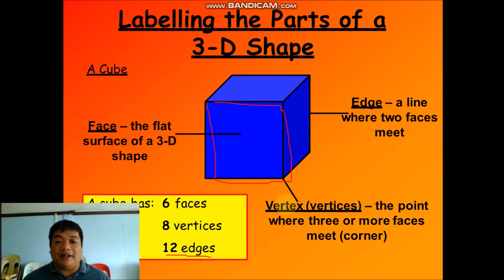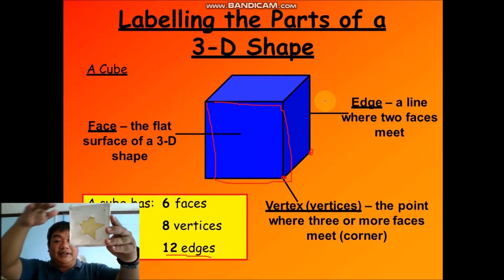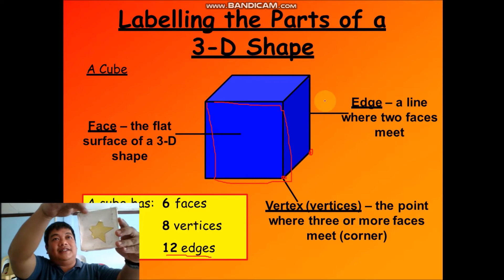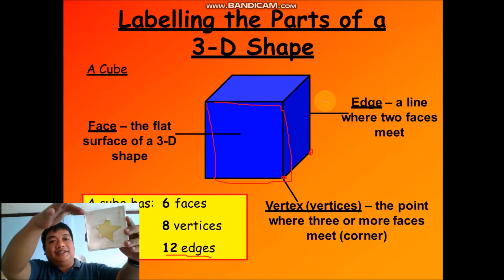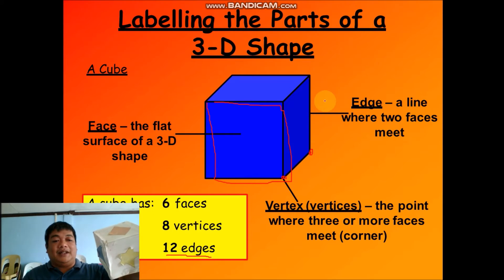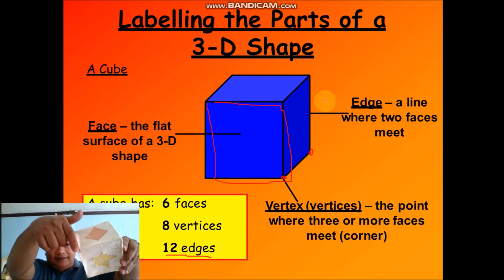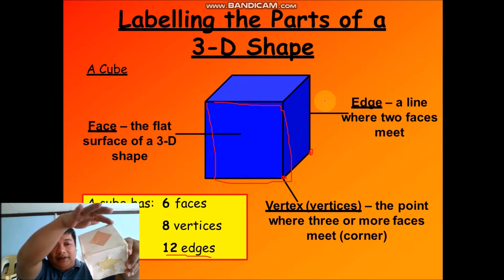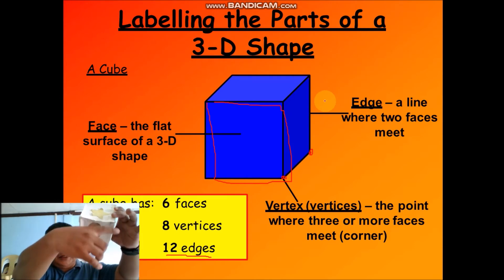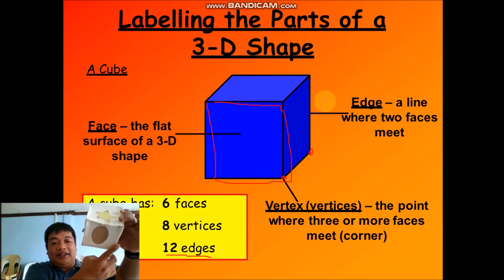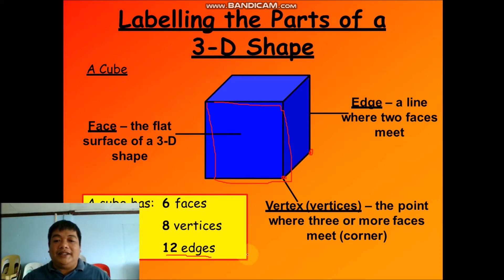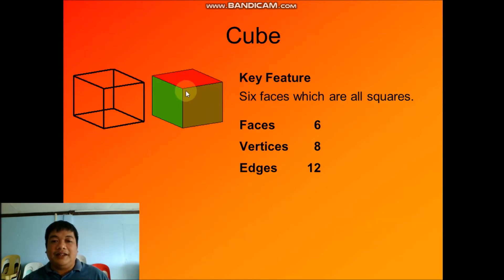There are twelve edges for a cube. Another part is the vertex. A vertex is the point where three or more faces meet. So the faces that meet at a certain point are called a vertex. How many vertices does a cube have? Let us count: one, two, three, four, five, six, seven, and eight.